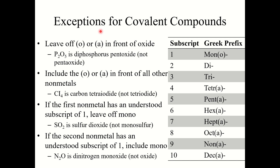Now there are a couple of small exceptions. First, you want to leave off the O or the A in front of oxide. For example, P2O5 would be diphosphorus pentoxide — you say pentoxide, not pentaoxide. Otherwise you do include that O or A, so for example CI4 would be carbon tetraiodide, not carbon tetraiodide with the A.